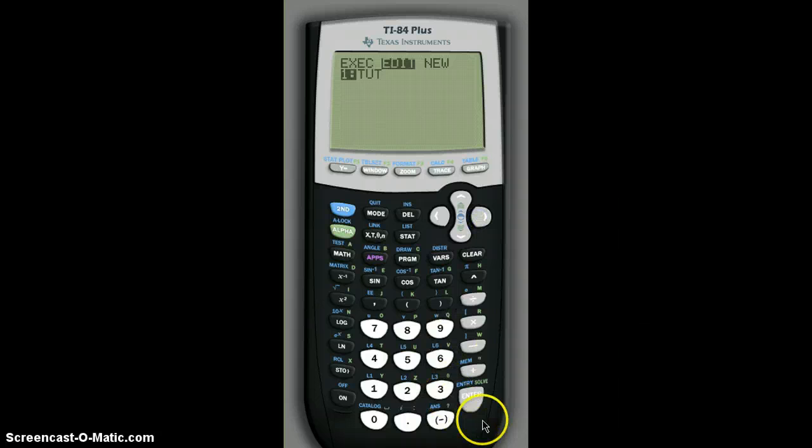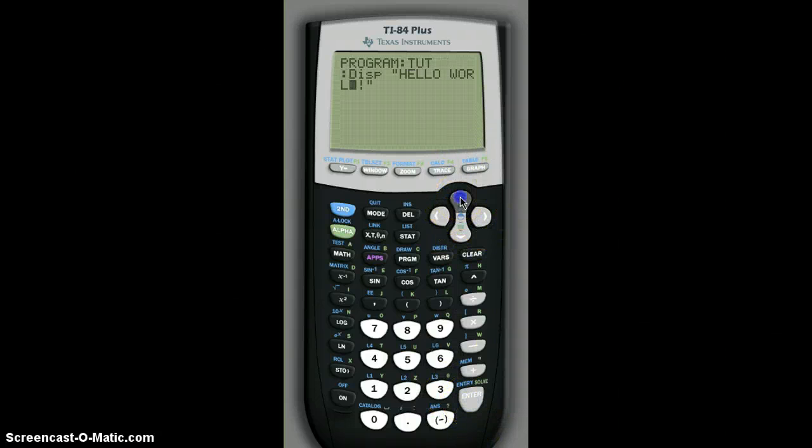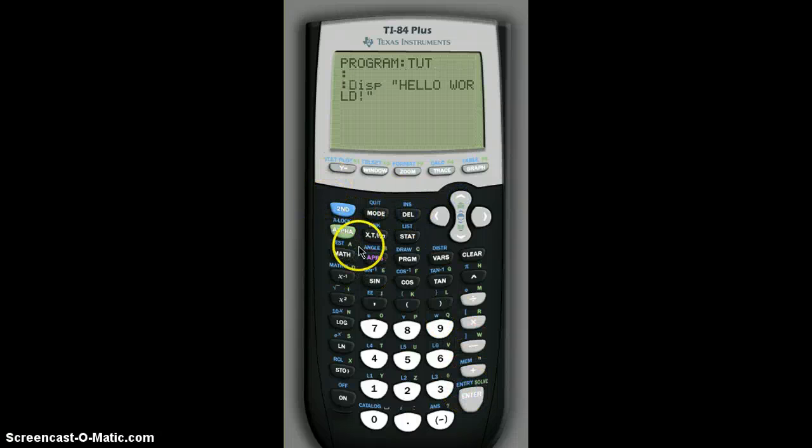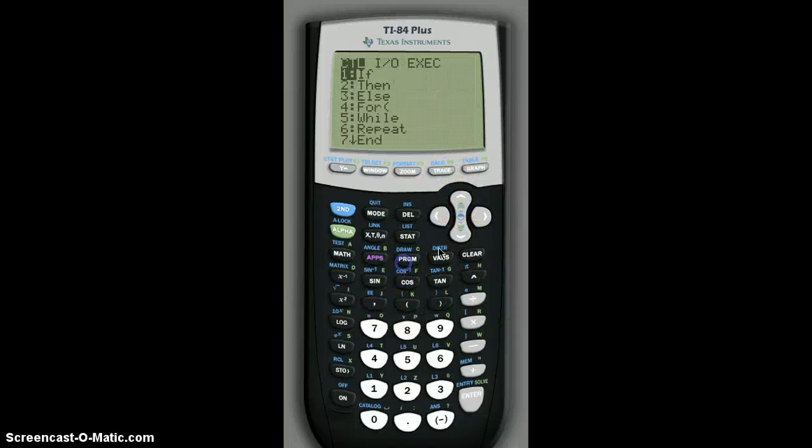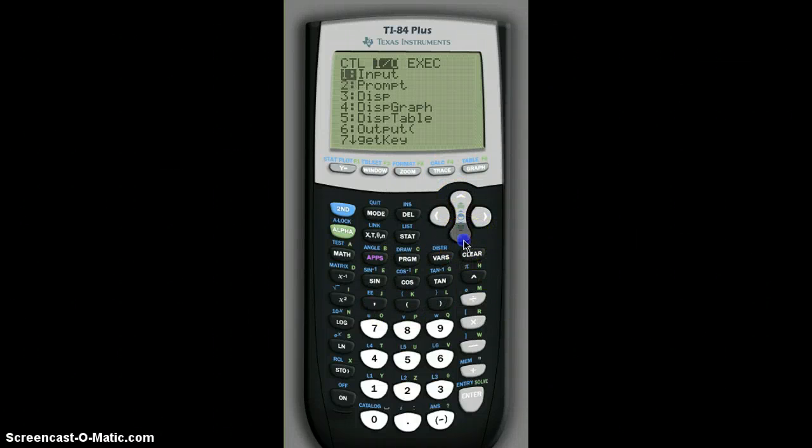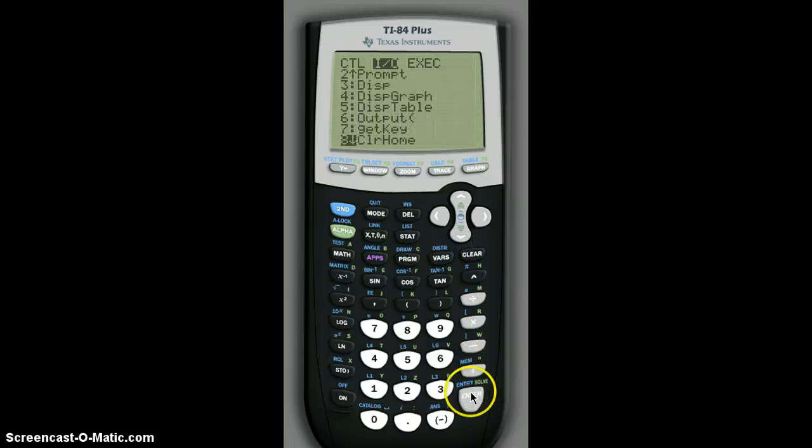So go back to program, edit tutorial. And then before display, you can press second delete to insert a new line. Before display, you're going to want to click program, IO, clear home.